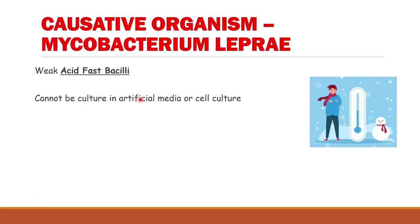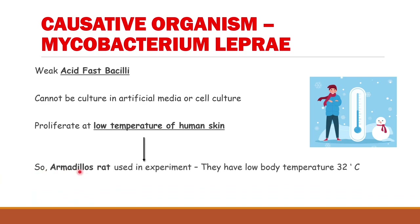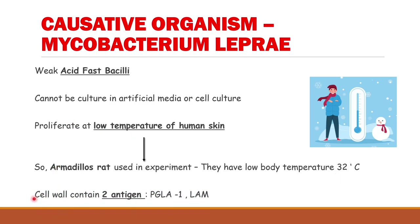Mycobacterium leprae cannot be cultured in artificial media or cell culture. It proliferates at the very low temperature of human skin, which is why for experimental purposes the armadillo is used, as it has a very low body temperature of 32 degrees centigrade. Its cell wall contains mainly two antigens: phenolic glycolipid-1 (PGL-1) and LAM antigens.